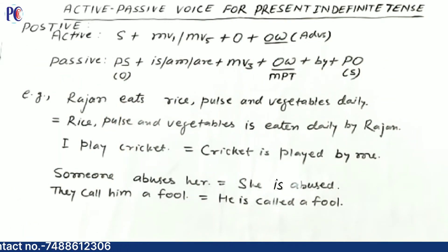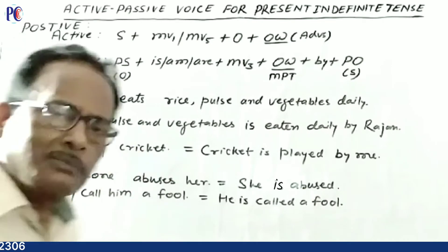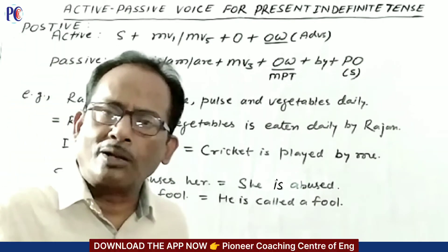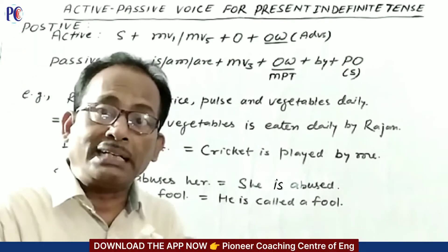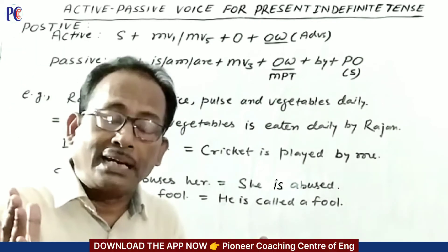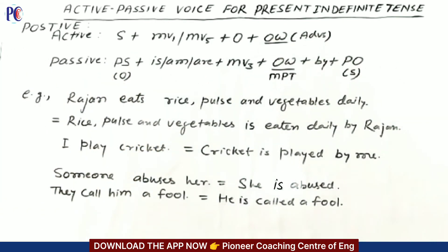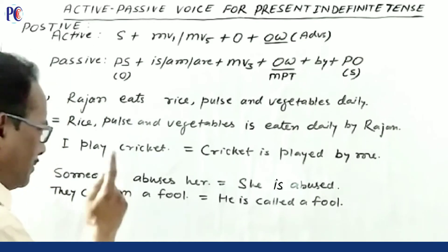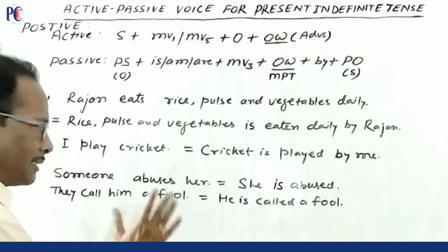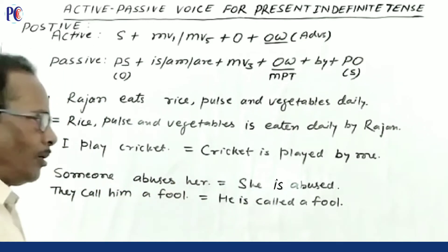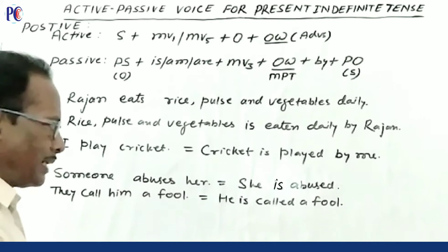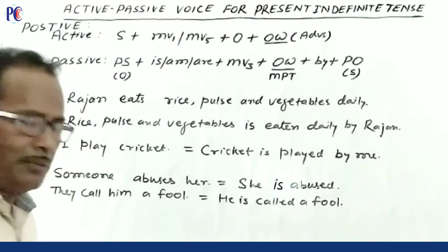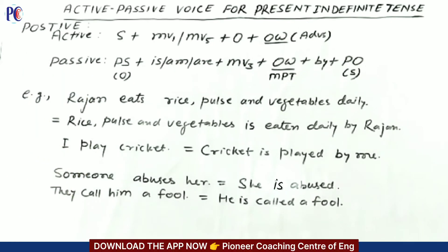'They call him a fool.' Here 'they' refers to people in general — an indefinite active subject. So the passive is: 'He is called a fool.' The complement 'a fool' stays in its place. 'Him' becomes 'he' as the passive subject. 'By them' is not required here.